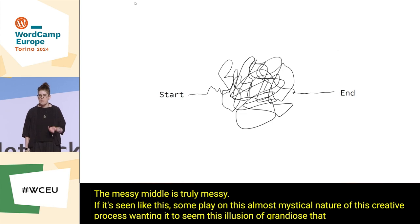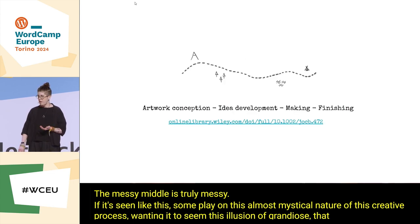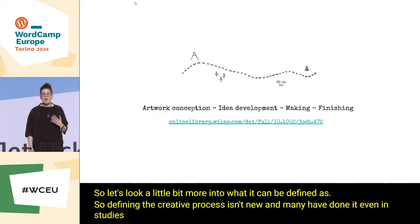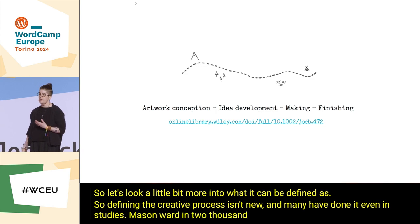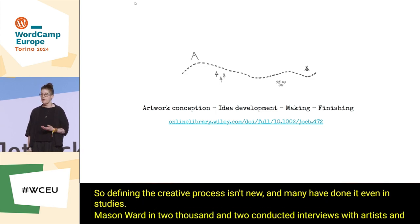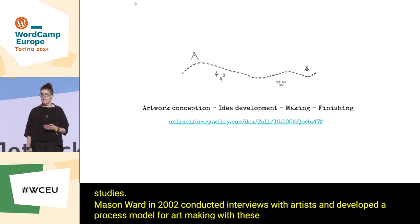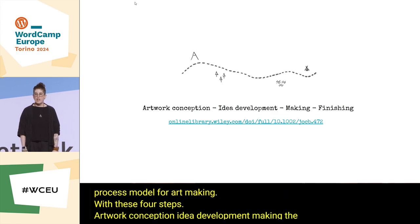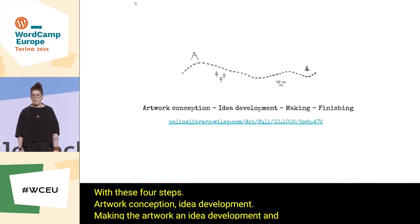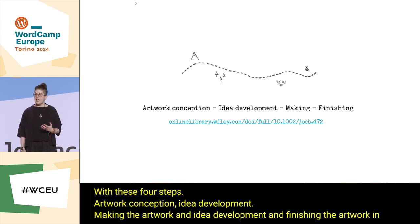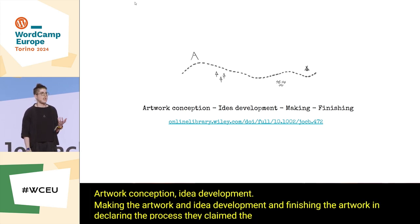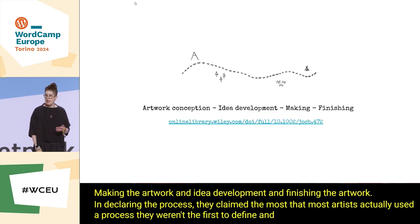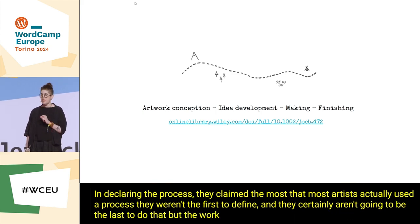Defining the creative process isn't new, and many have done it even in studies. Mason Ward, in 2002, conducted interviews with artists and developed a process model for art making with four steps: artwork conception, idea development, making the artwork, and finishing the artwork. In declaring the process, they claimed that most artists actually used a process. Their work had some really interesting aspects, looking at the theme that artists follow throughout their career.